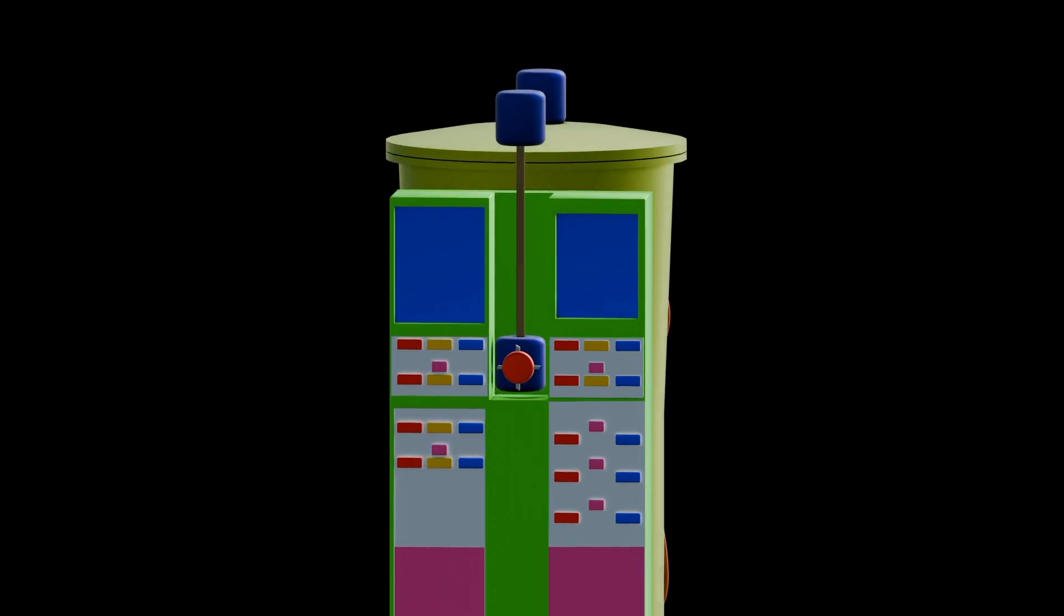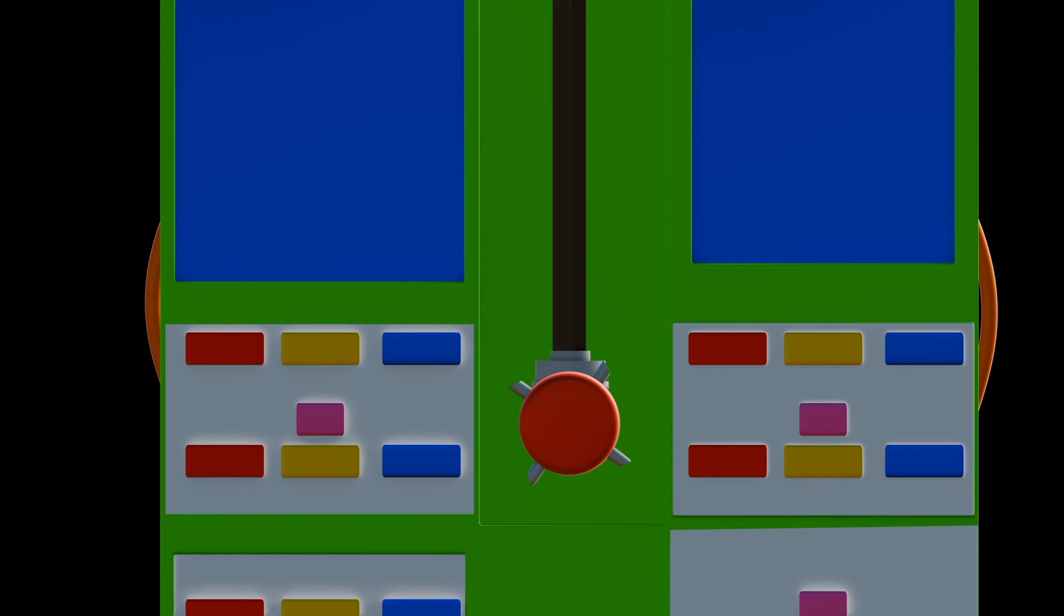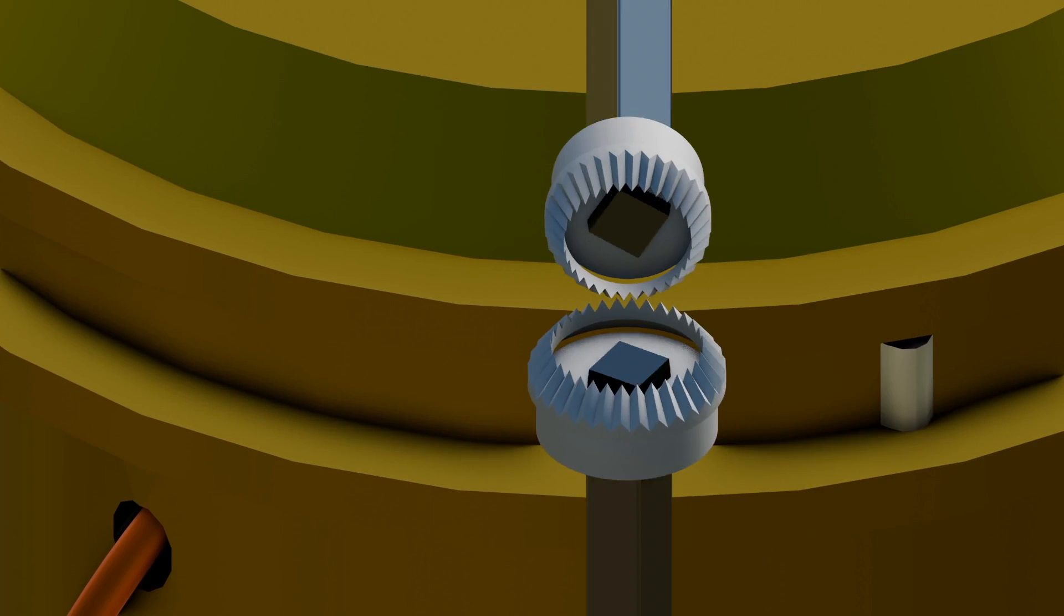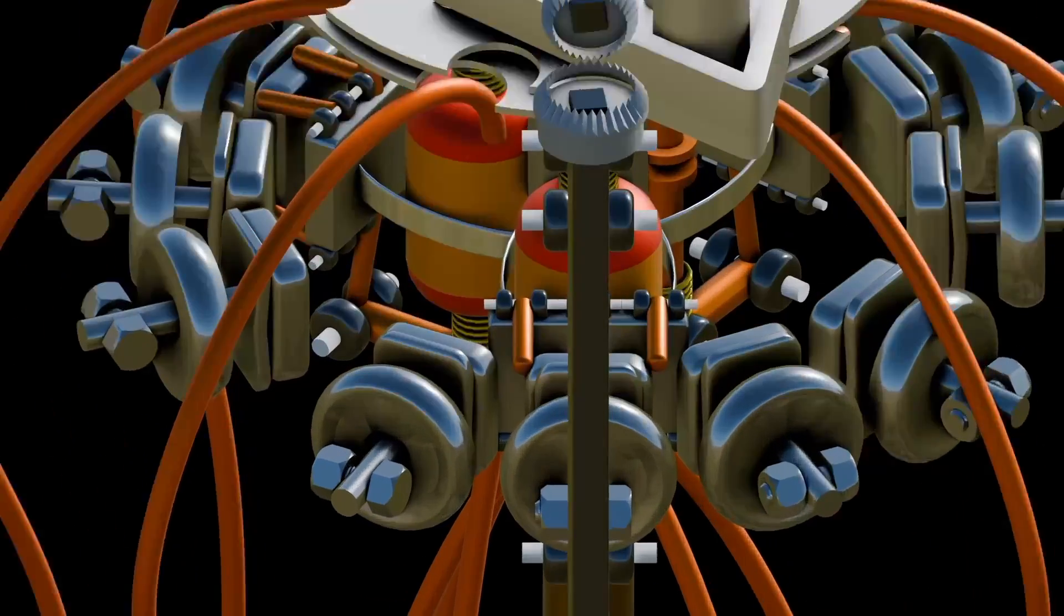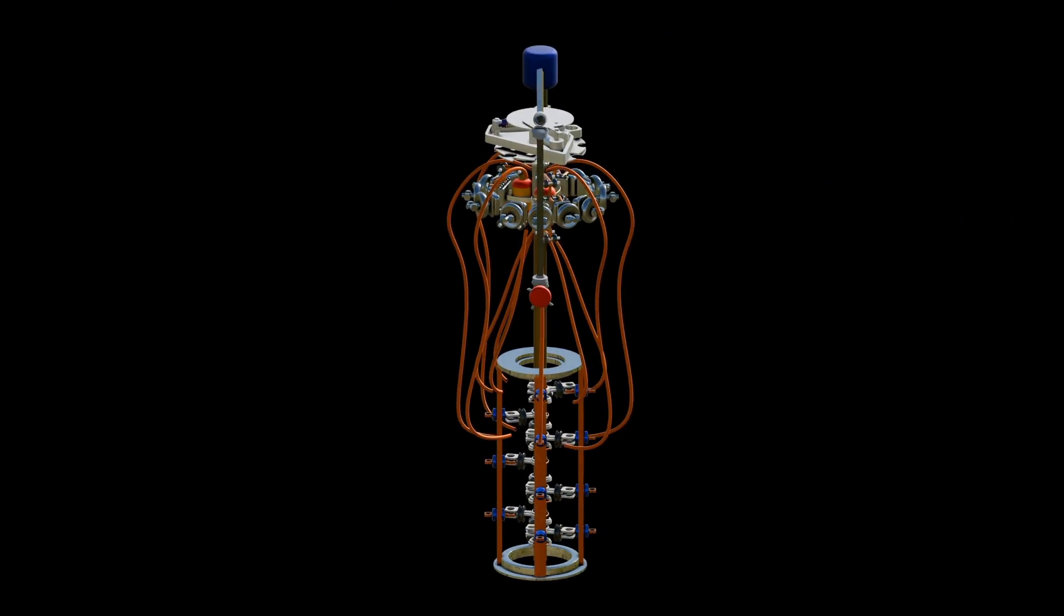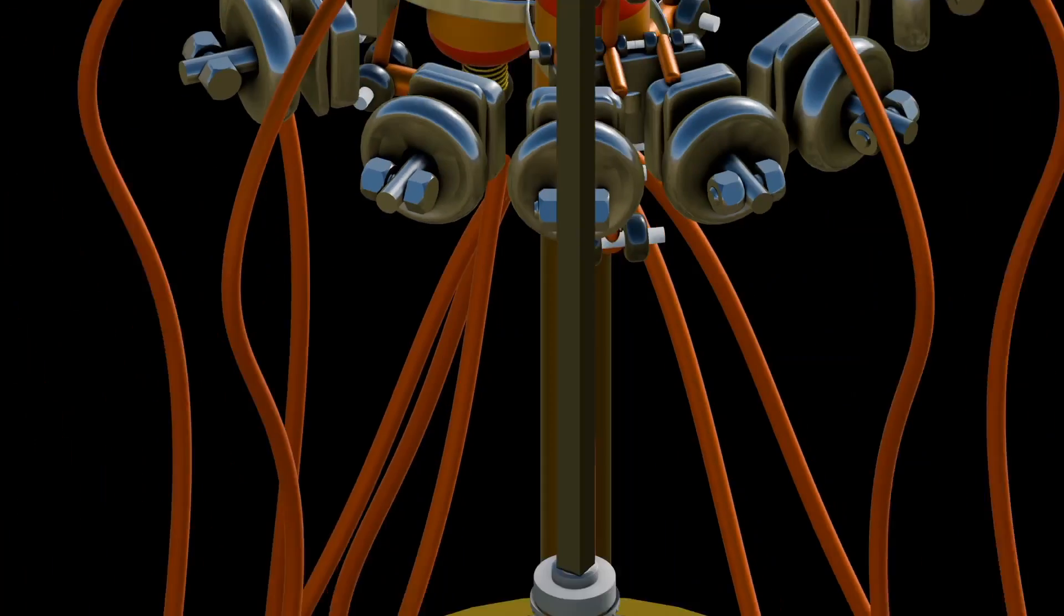Tap changer mechanism - this is the mechanism responsible for changing the tap position of the transformer winding. It can be either motor driven or operated by other means such as pneumatic or hydraulic systems.